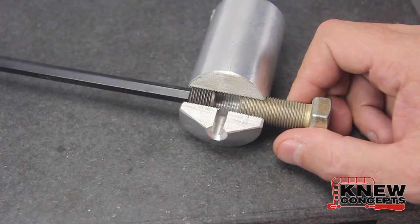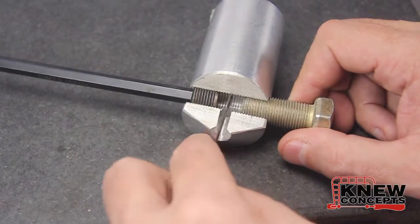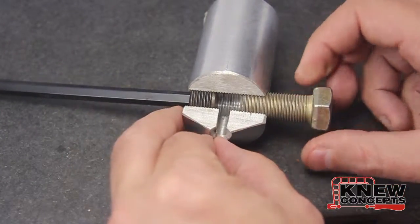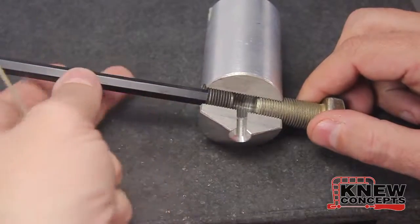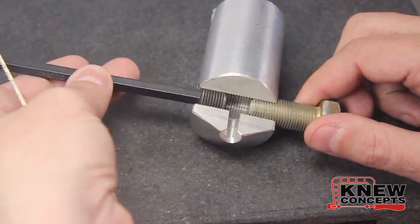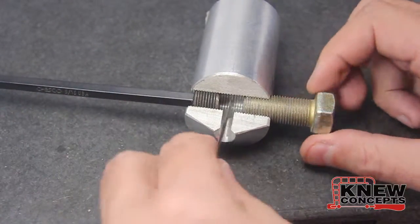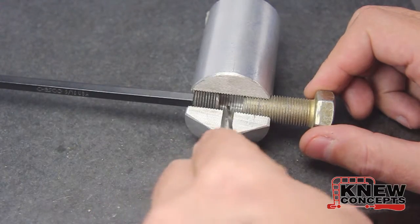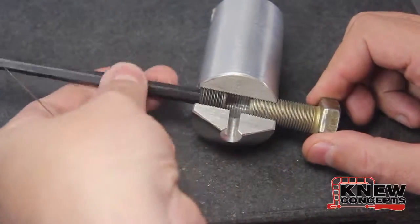However, you can have problems and the biggest one that happens is if the anvil screw, which is this guy here, this little set screw, is too far back. You see how there's kind of a step here? Let me make it worse. See how it's way back there?